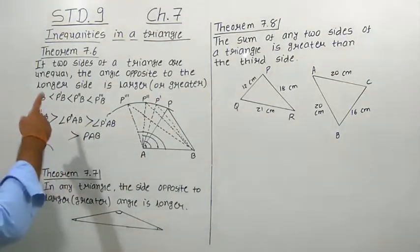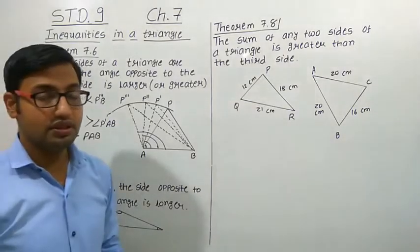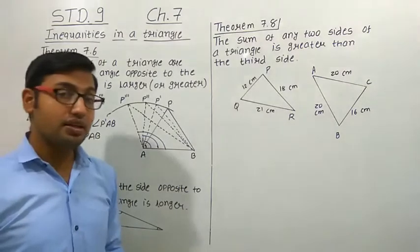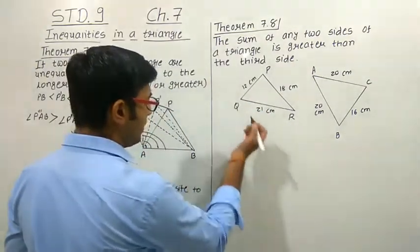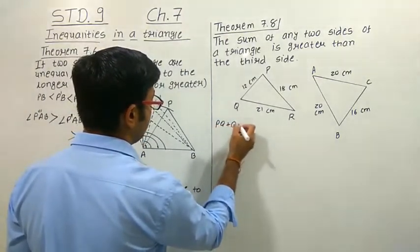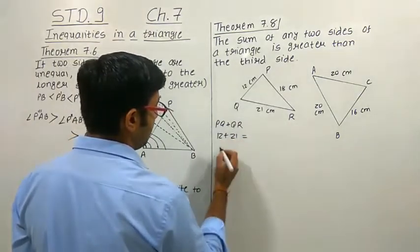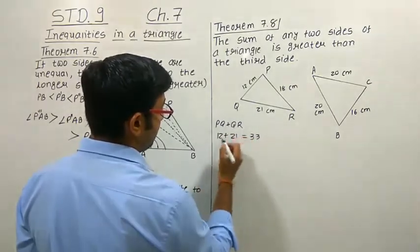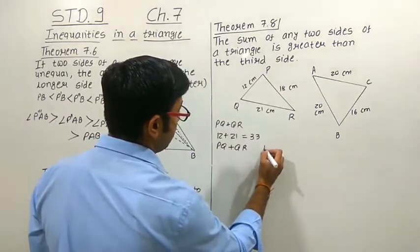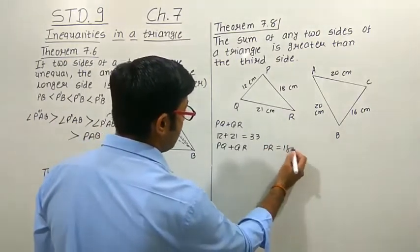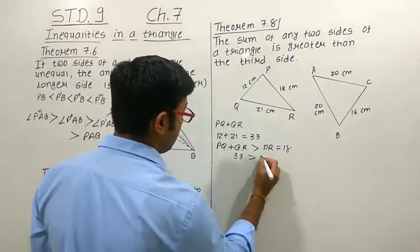Theorem 7.8 is also under inequalities in a triangle: the sum of any two sides of a triangle is greater than the third side. For triangle PQR with PQ = 12, QR = 21, and PR = 18: PQ + QR = 33, which is greater than PR = 18. So the sum of those two sides is greater than the third side.